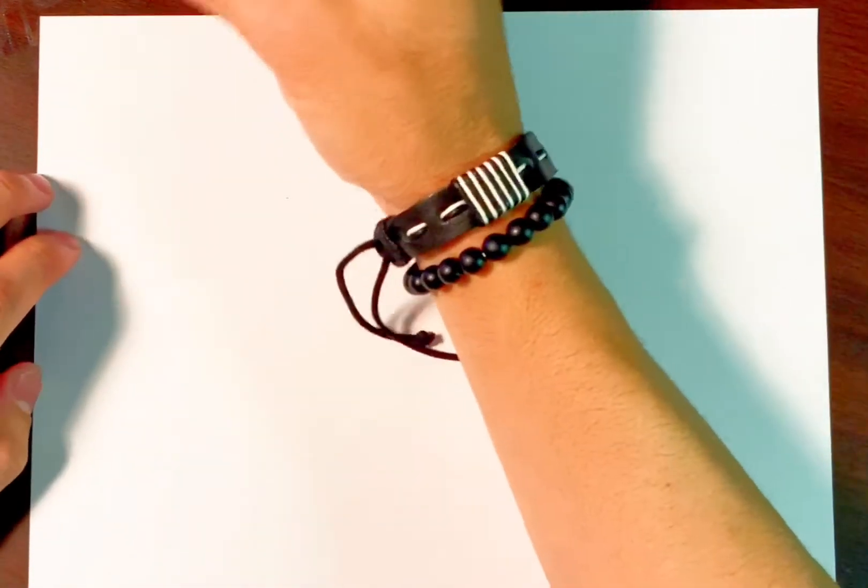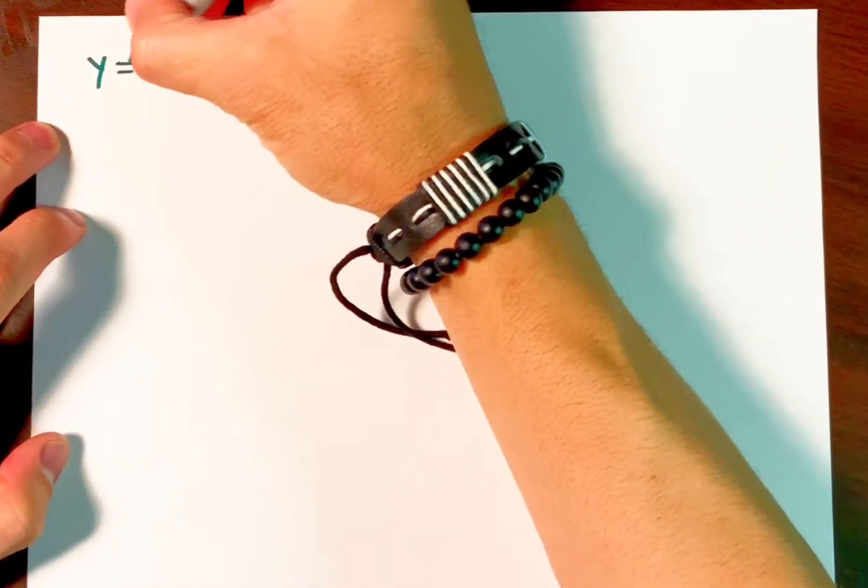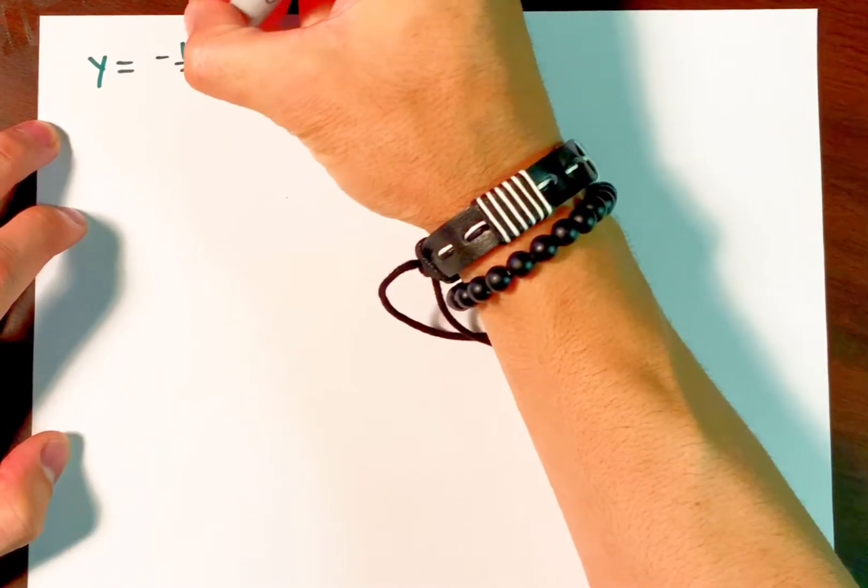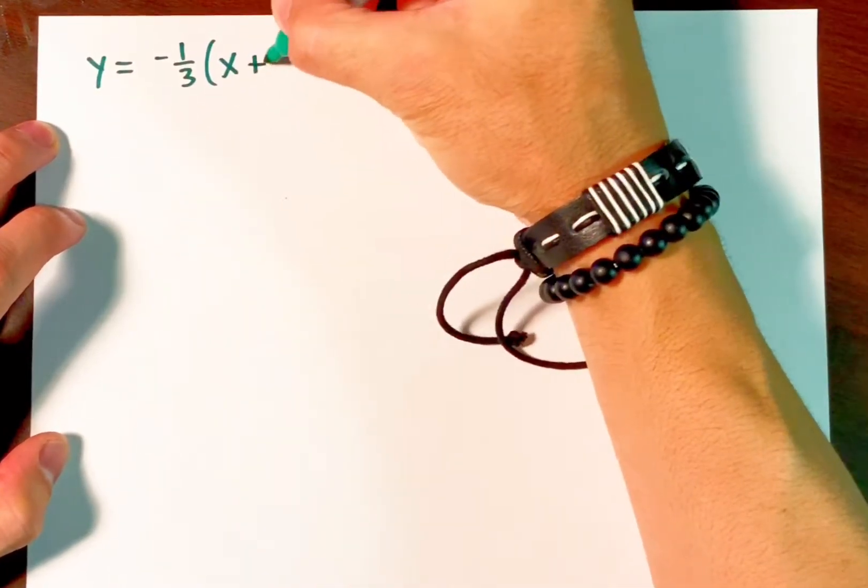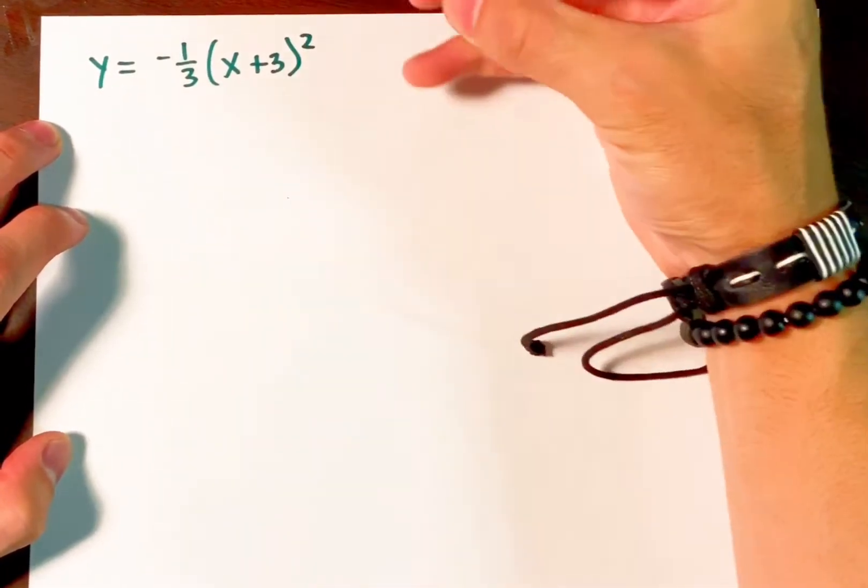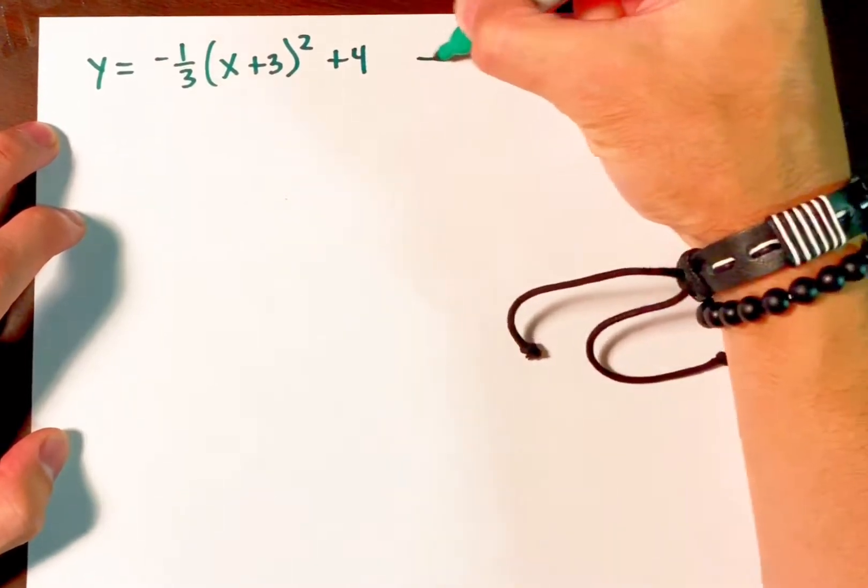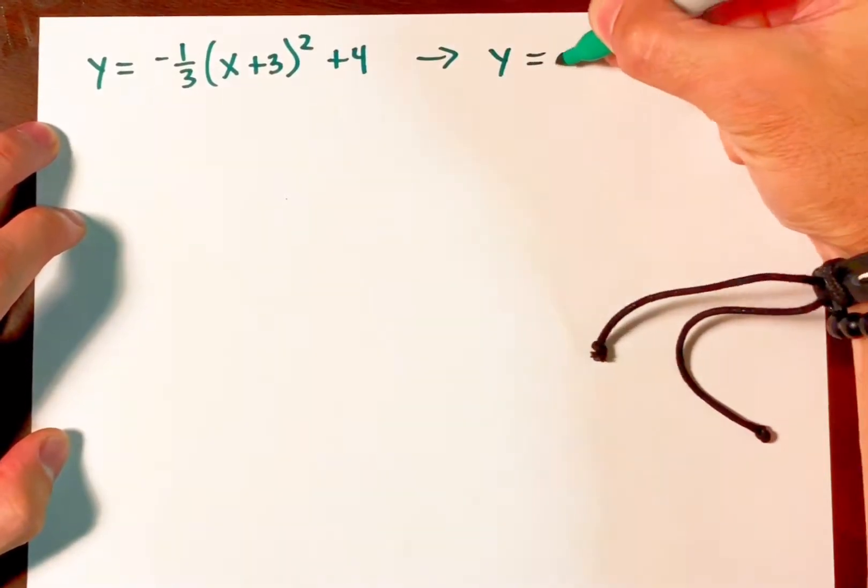Okay, so let's say that you wish to take an equation of a quadratic that is currently in vertex form and you wish to convert it to what we call standard form.